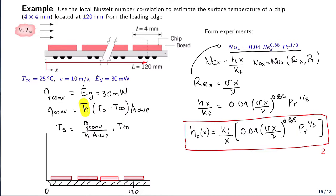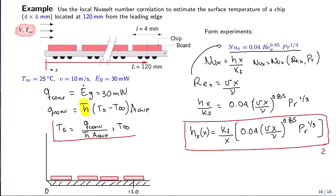From Equation 1, the only unknown is the temperature on the surface. So we need to solve for the surface temperature, and that will be our result once we solve. This is Equation 1.